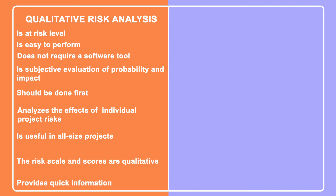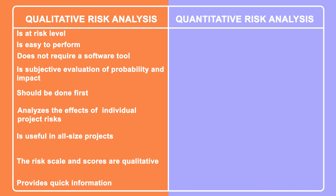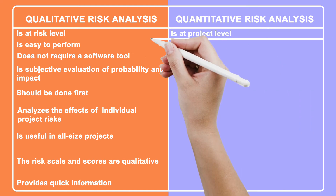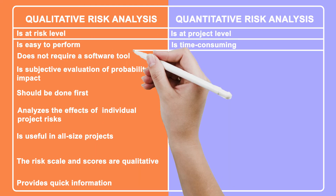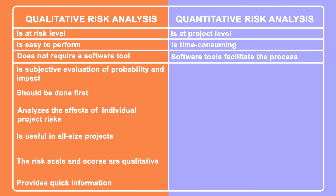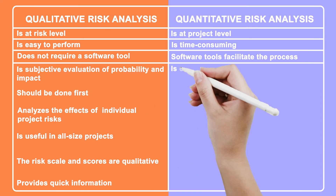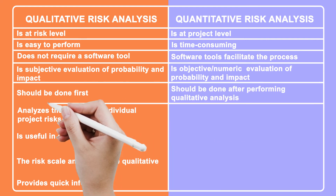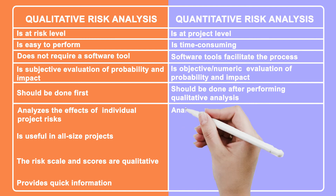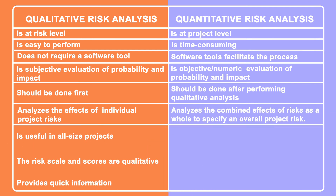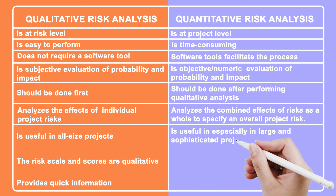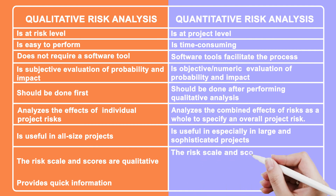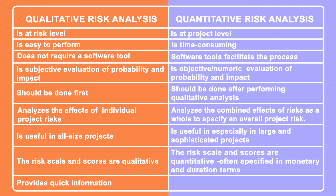Quantitative risk analysis provides quick information. On the other hand, quantitative risk analysis is at project level, is time consuming, software tools facilitate the analysis process, is an objective numeric evaluation of probability and impact, should be done after performing qualitative analysis, analyzes the combined effects of risks as a whole to specify an overall project risk, is useful especially in large and sophisticated projects, and the risk scale and scores are quantitative — often specified in monetary and duration terms.